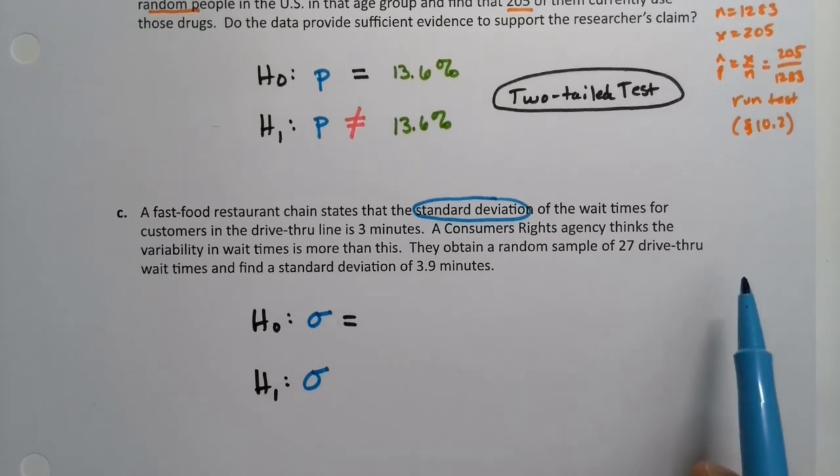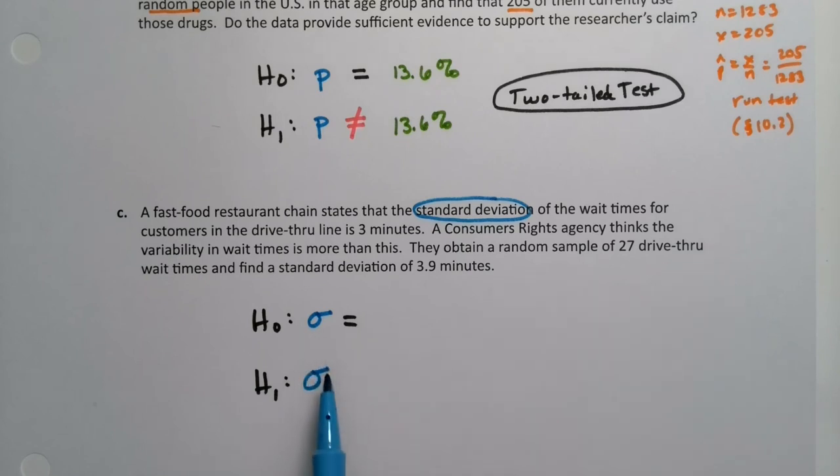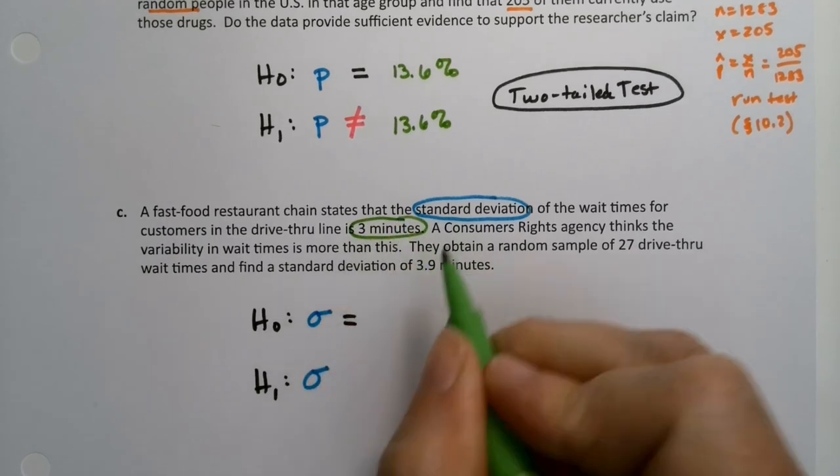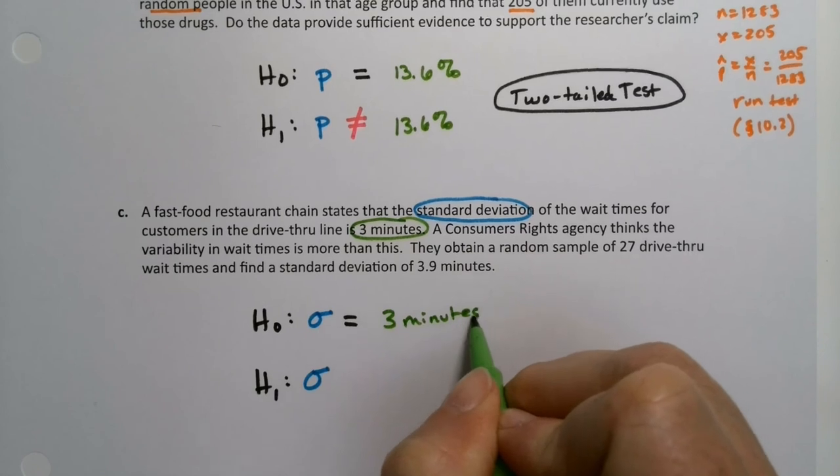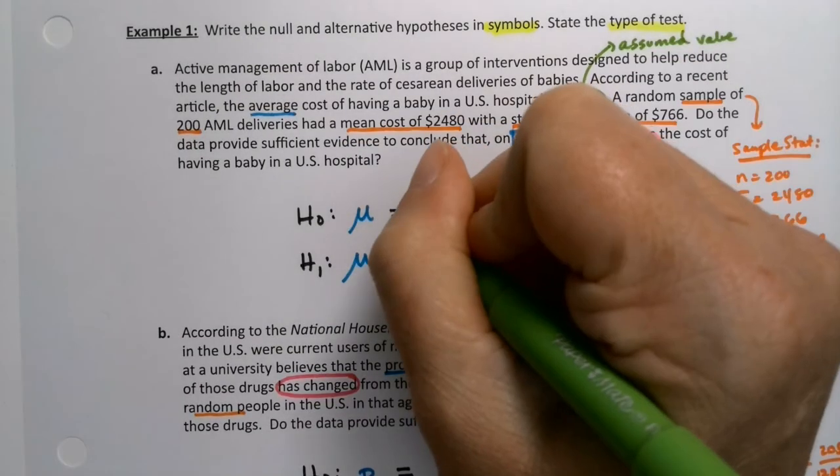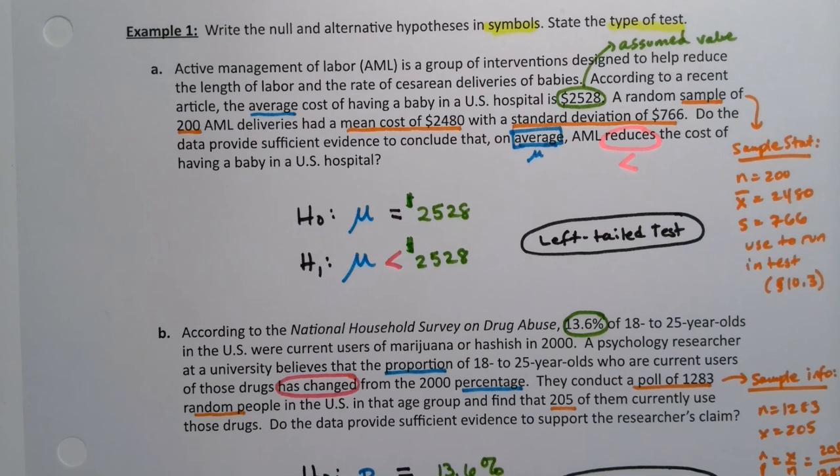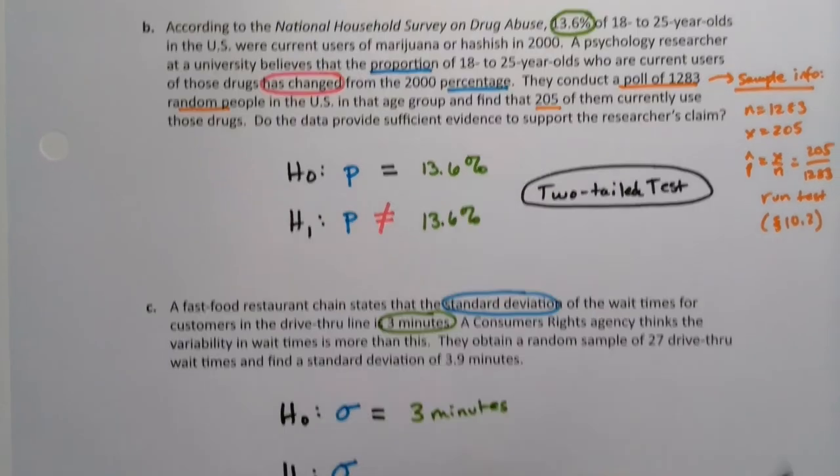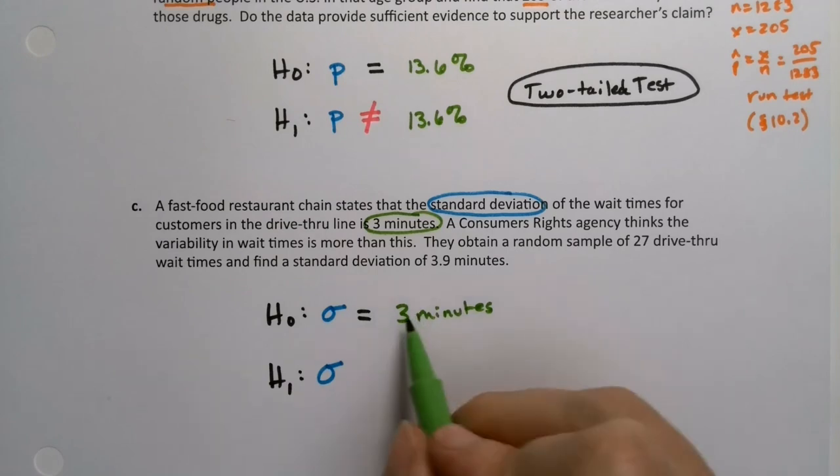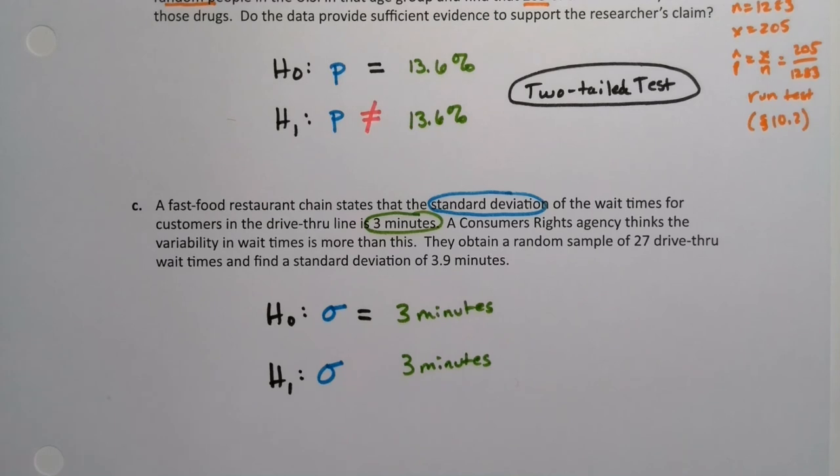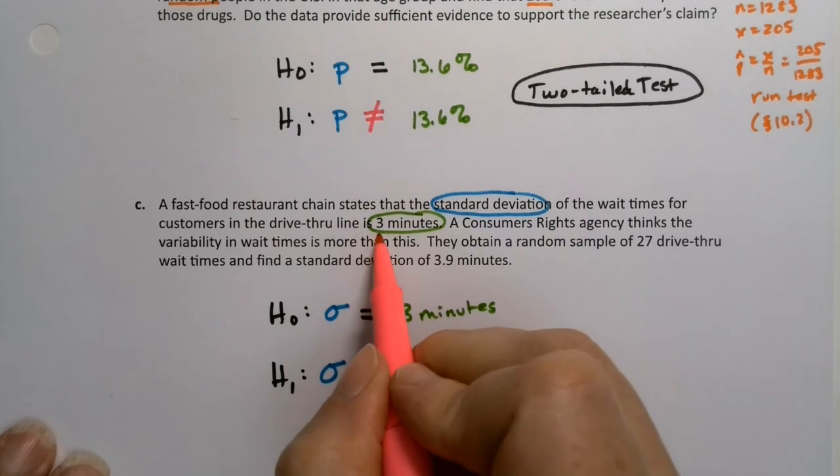So we assume that it's three minutes because that's what it said, right? The organization said it's three minutes. Yes, you can have units over here. As a matter of fact, I should have had dollars on these ones, right? Because those were dollars. Sorry about that. So they can have units or percent signs or units, right? That's fine. So once it's three minutes there, it's three minutes here. It has to be the same for both. And then the agency or the consumer's right agency thinks that it might be more than.